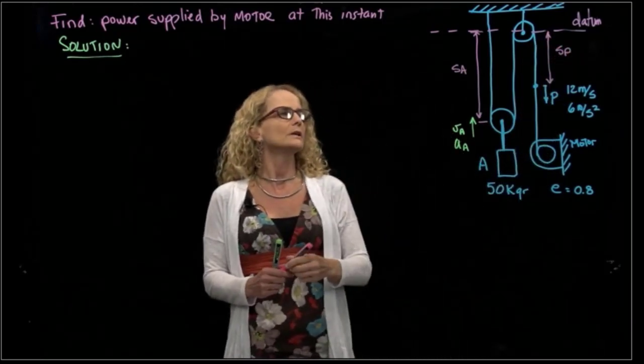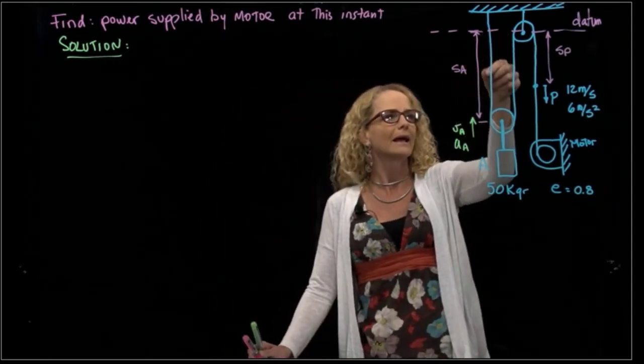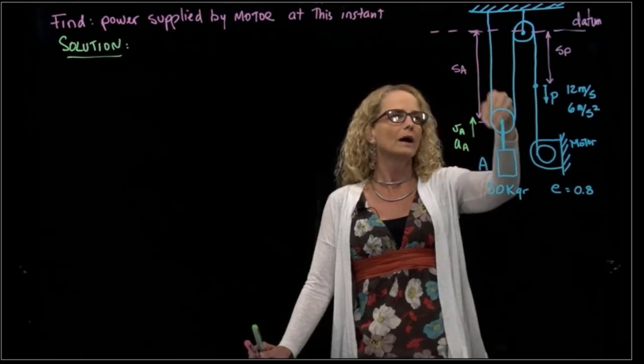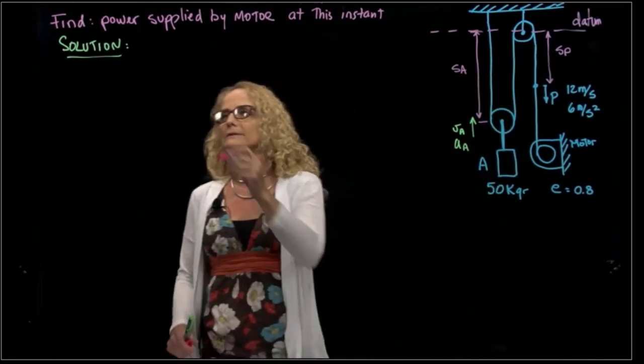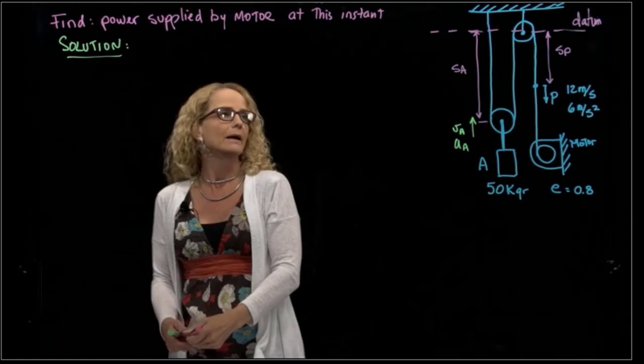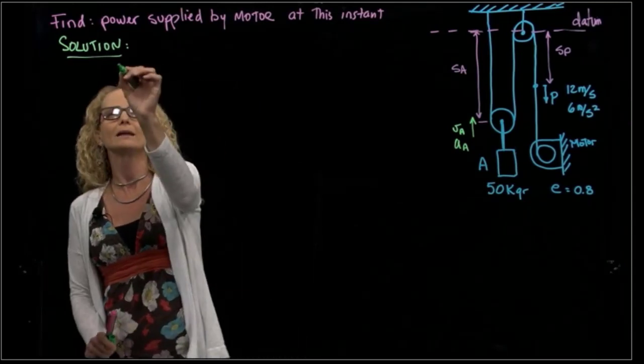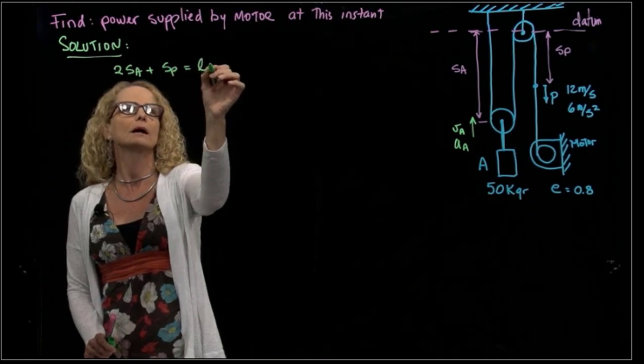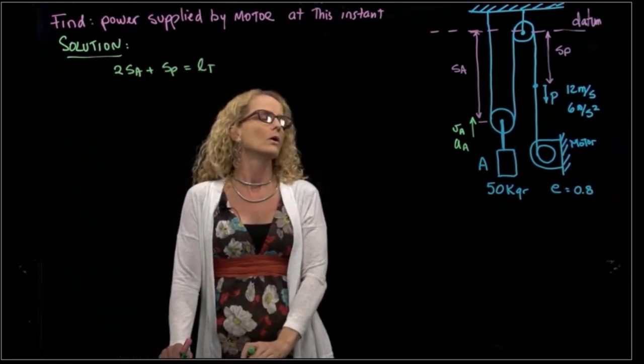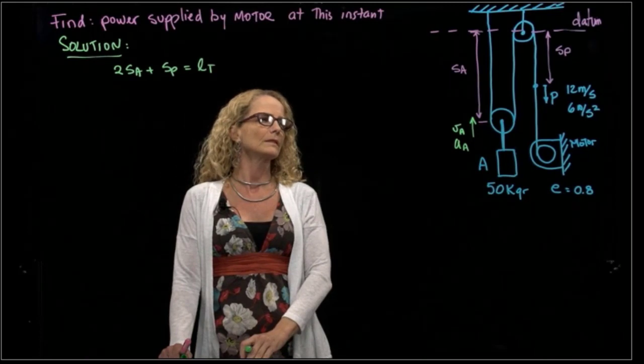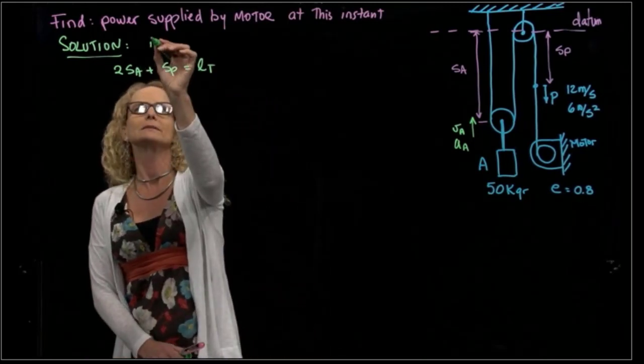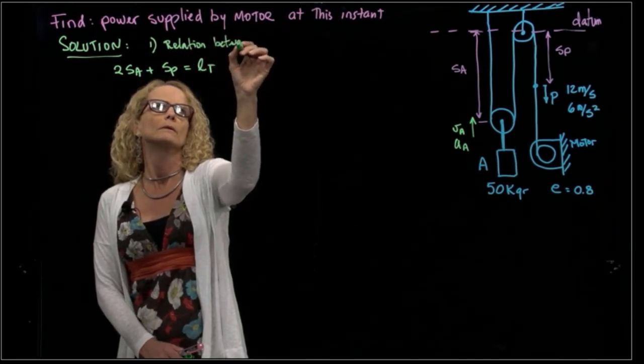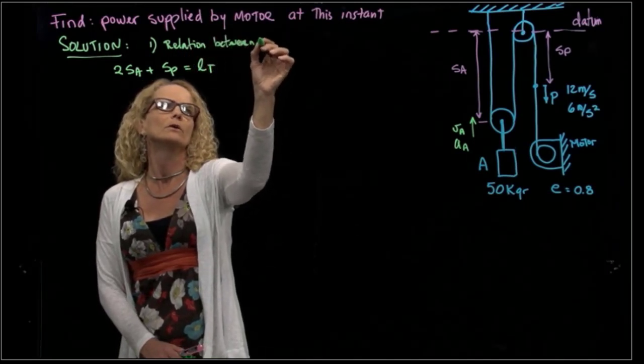We will name the distance from that reference frame SA and this distance SP. As you see, we have only one cable, so there's only one length. We can write that 2SA plus SP equals the total length of the cable. So that's actually step number one, which is relations between velocities.